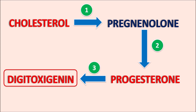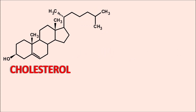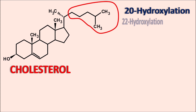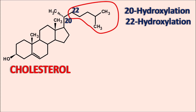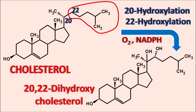Now let us go into detail about these three steps. The first step is cholesterol to pregnenolone. Pregnenolone has the pregnene nucleus which is the C21 nucleus. The extra carbons from cholesterol must be removed. To remove these carbons, cholesterol undergoes hydroxylation at two positions — 20-hydroxylation as well as 22-hydroxylation — in the presence of oxygen and NADPH, giving the intermediate 20,22-dihydroxycholesterol.